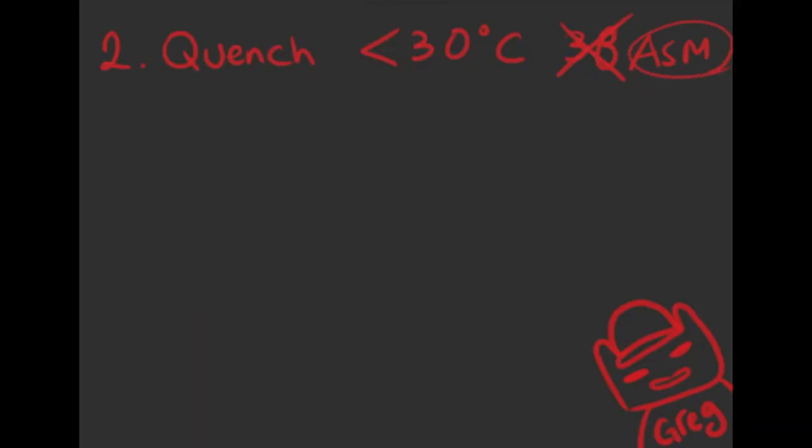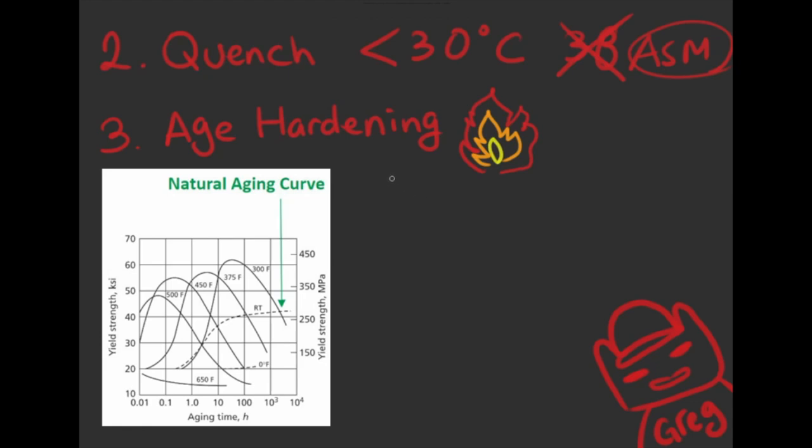After quenching, we now have a super saturated solid solution. This makes the alloy optimal for H hardening. We will naturally age this alloy for 46 days from negative 25 degrees to 25 degrees celsius, according to the aging curve. This is done to obtain a high toughness instead of strength. Even better, we don't need to use a furnace, unlike artificial aging, so that decreases the cost.